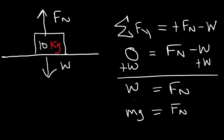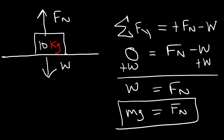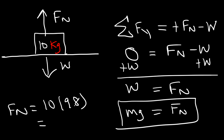So if you have a flat object at rest on a horizontal surface, the normal force is equal to the weight force, as we've seen in the earlier example. It's going to be 10 times 9.8, which is 98 newtons.